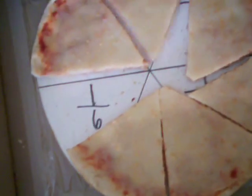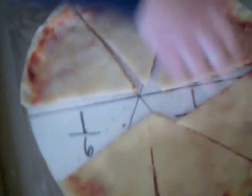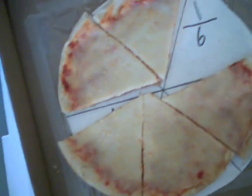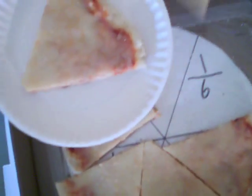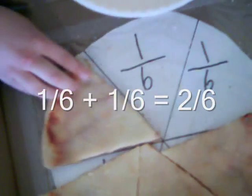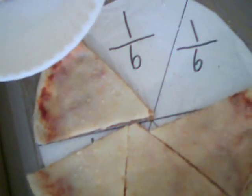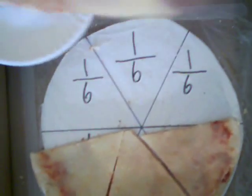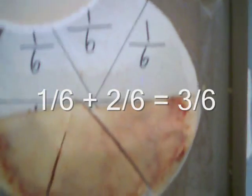This pizza is cut into six pieces. If you want to eat two slices, you'd be eating two sixths of the whole pizza. If you want to eat three slices, that would be three sixths of the whole pizza.